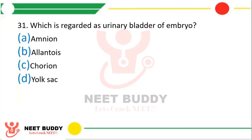Question number 31: Which is regarded as the urinary bladder of the embryo? Option A: Amnion. Option B: Allantois. Option C: Chorion. Option D: Yolk sac. The correct answer is option B, that is allantois.